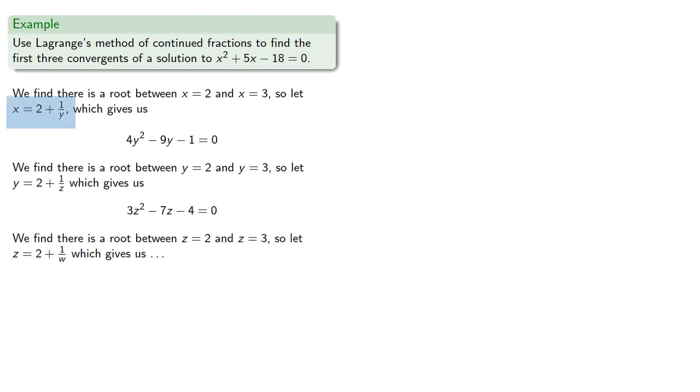And so we have x equals 2 plus 1 over y, but y equals 2 plus 1 over z, but z equals 2 plus 1 over w, and so on. And so we have our continued fraction expansion for our solution x.